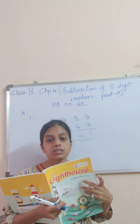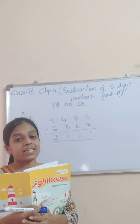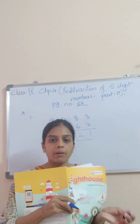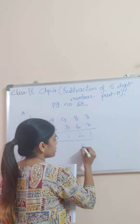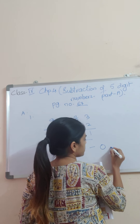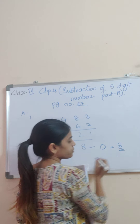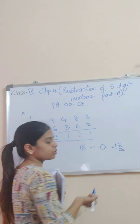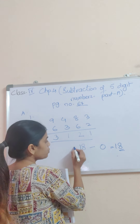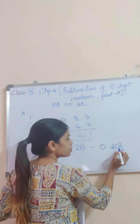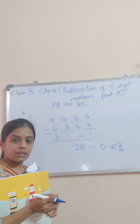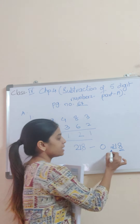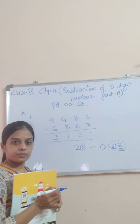The first property is: whenever you subtract any number with 0, the answer is the same number. Suppose if the number is 8, and we subtract 0, the answer will be 8. No matter if it is a 2-digit number — if we have 18 and subtract 0, the answer is 18. If we have 218 and subtract 0, the answer is 218. This means whenever we have minus 0, the answer is the same number.